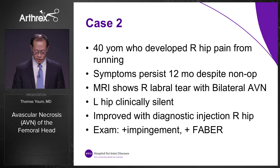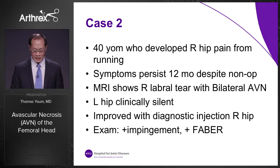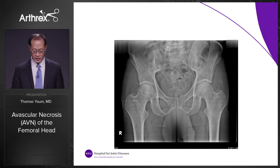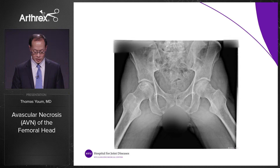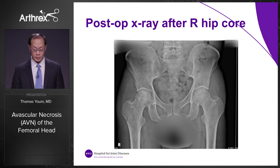The second case is a 40-year-old male who developed right hip pain from running; symptoms persisted despite 12 months of non-operative treatment. MRI showed a right labral tear with bilateral AVN; the contralateral left hip was clinically silent with no pain. He improved with a diagnostic injection on the right hip and had a positive impingement sign and FABER test. He underwent right hip arthroscopic labral repair with pincer resection and core decompression. Six months later, the patient underwent left hip diagnostic arthroscopy with core decompression — despite being asymptomatic — to prevent AVN progression. Post-op x-rays demonstrate the core decompression tract.